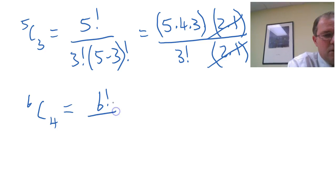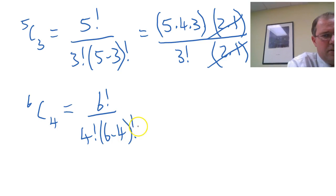So from my formula, n choose r, 6 factorial over 4 factorial, 6 minus 4 factorial, which is 2 factorial again.